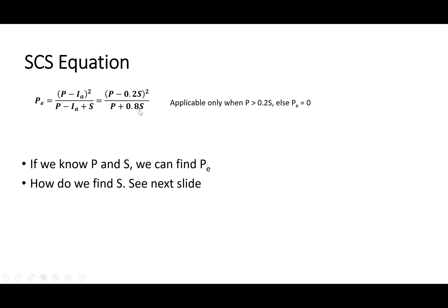This expression is only applicable when the expression inside the parenthesis in the numerator is positive. In other words, if cumulative total rainfall is less than the initial abstraction, there is no direct runoff or excess rainfall. PE equals zero when P is less than 0.2S. Before using this expression we must make sure that P minus 0.2S is positive.